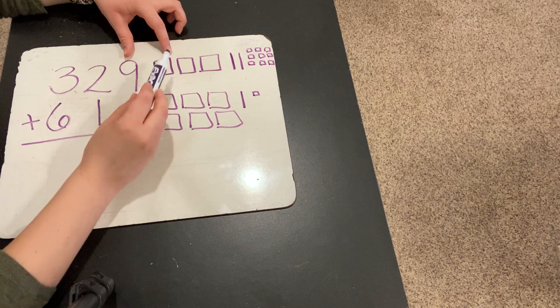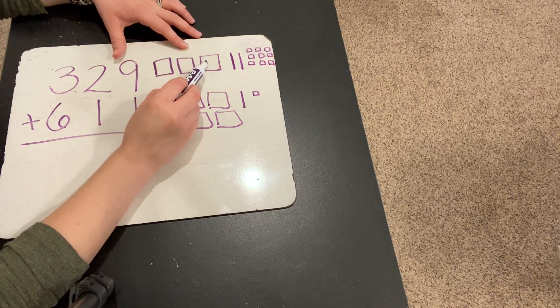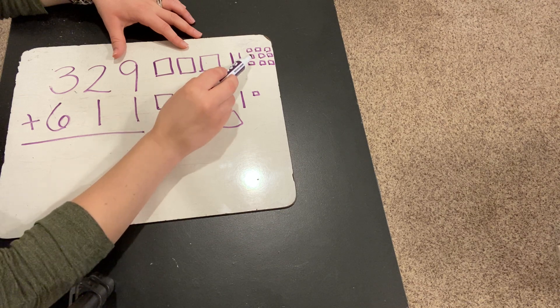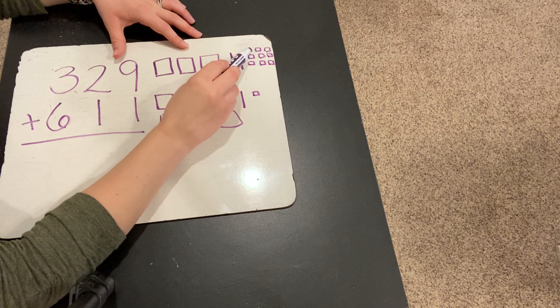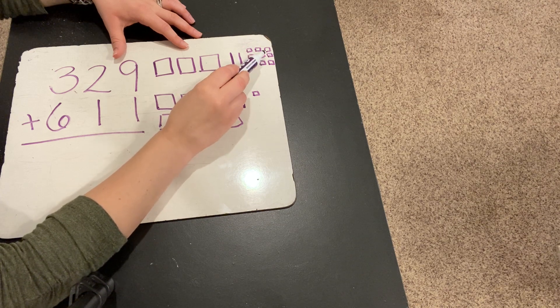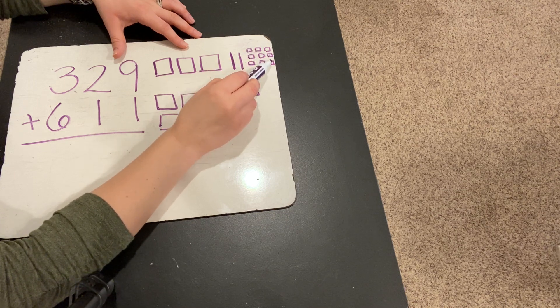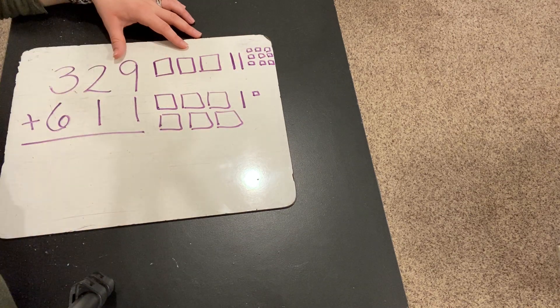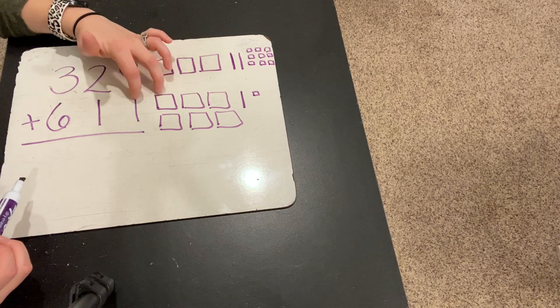Let's check 329. 100, 200, 300, 310, 320, 321, 322, 323, 324, 325, 326, 327, 328, 329. Okay, so that one is modeled correctly.